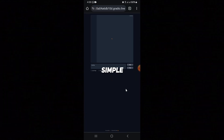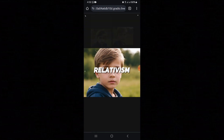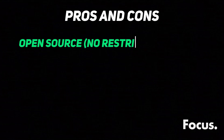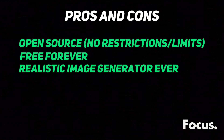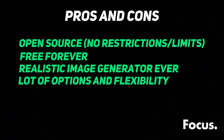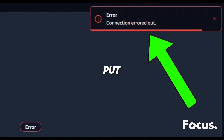You can change the model, but I would suggest the default. On Advanced, you can choose the guidance and image sharpness. Let's generate a simple image. I personally like the realism of the image. It is open source, which means no restrictions or limits — free for everyone and forever. It is one of the most realistic image generators ever, with a lot of options and flexibility. However, it is very slow, and if you run it on Google Colab it may show an error if you put a little heavy load on it.